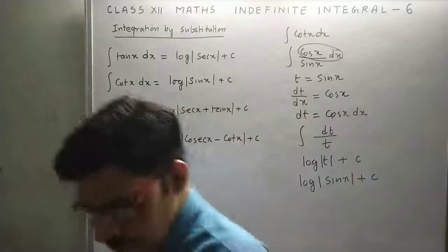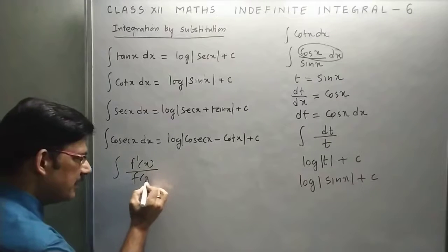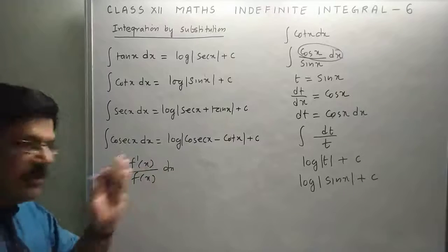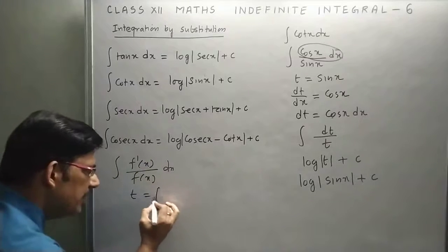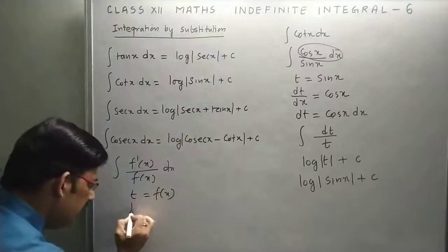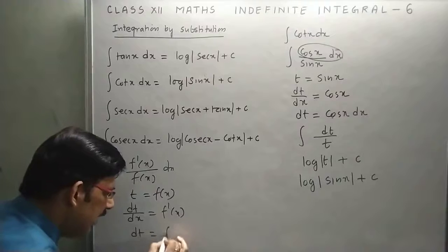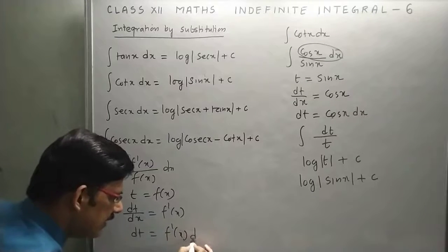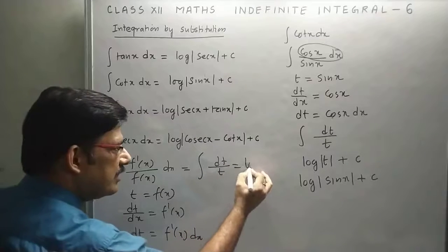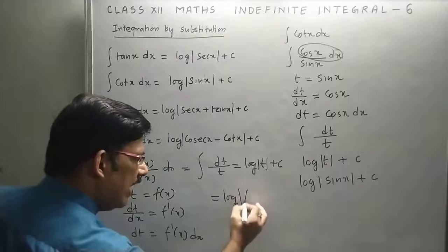Let's take another case: suppose we have f dash x upon f x. Whenever you have the derivative of the denominator at the numerator, you suppose the denominator as t. This is called substitution. Now differentiate: dt upon dx equals f dash x, so dt equals f dash x dx. This integration becomes dt upon t, or log t plus c. The answer will be log of f x plus c.